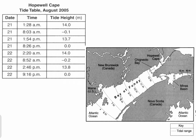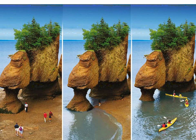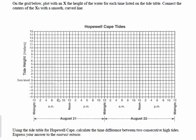Let's start by graphing the data table. Notice we have the independent variable of time and the dependent variable of tide height. Here's a pretty cool image — you can hike in an area and then later in the day actually go kayaking. On the x-axis, our independent variable is separated by two days: August 21st, going from midnight to noon (a.m.) and noon to midnight (p.m.), then August 22nd. The y-axis is tide height in meters, measured above or below sea level.